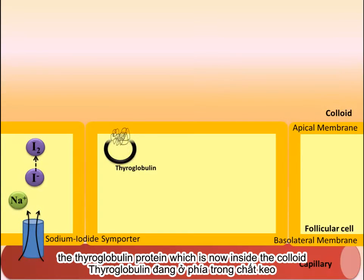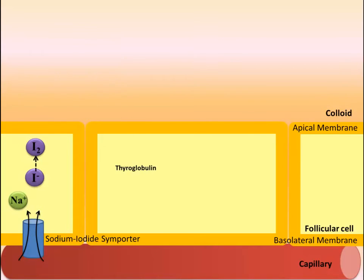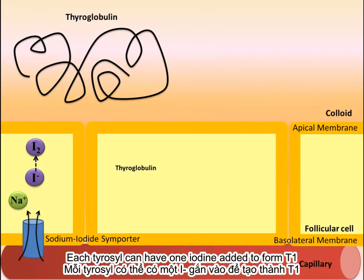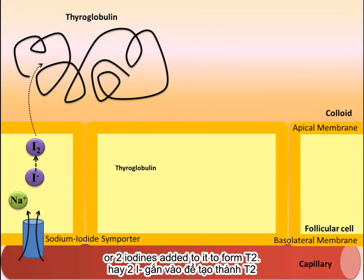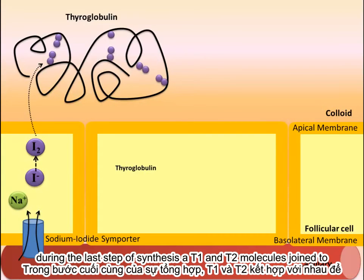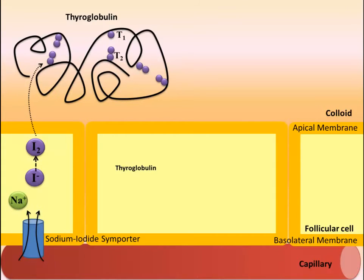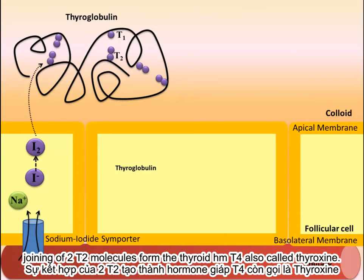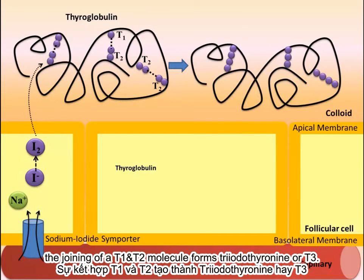The thyroglobulin protein, which is now inside the colloid, can become iodinated at tyrosine residues. Each tyrosine can have one iodine added to form T1, or two iodines added to form T2. During the last step of synthesis, a T1 and T2 molecule join to form T3, or two T2 molecules join to form T4. The joining of two T2 molecules forms the thyroid hormone T4, also called thyroxine. The joining of a T1 and T2 molecule forms triiodothyronine, or T3.